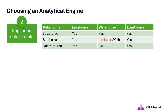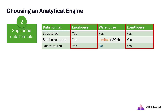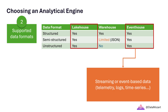The table you see depicts supported data formats in the three Fabric analytical storages. As you can see, both lake house and event house support all data formats. So the fair question would be: when should I use a lake house over an event house? The short answer is: whenever you need to handle any type of streaming or event-based data, choose an event house.